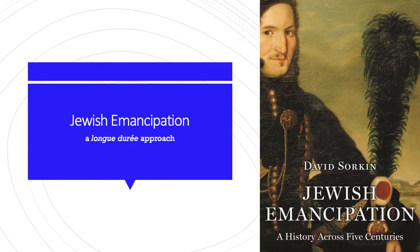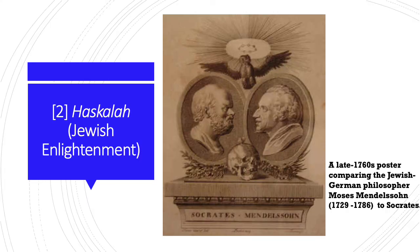Emancipation is a complicated term. I would strongly recommend picking up David Sorkin's latest book on Jewish Emancipation — a history across five centuries — that shows the nuances and provides a portrait of emancipation as part of a much longer history of citizenship that is not only centered on Europe. I will move now to our second concept, which is related but definitely not synonymous: Haskalah.